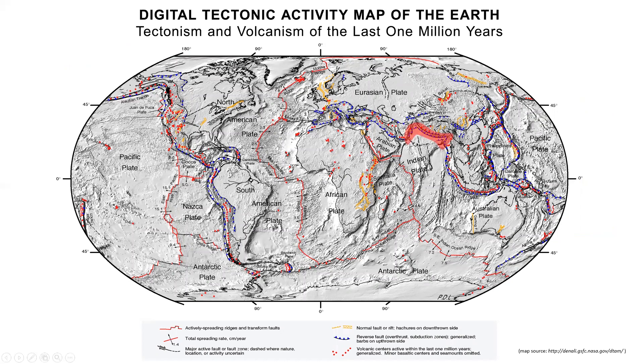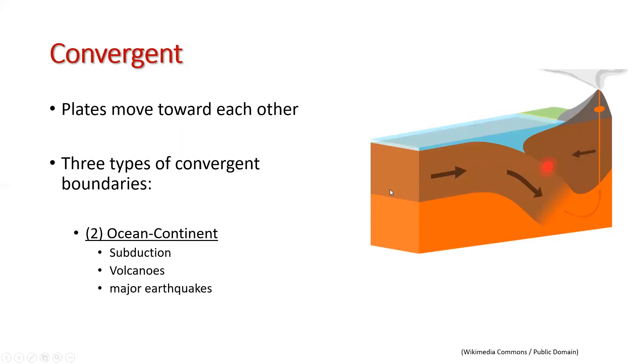The next subtype is ocean-continent convergent boundaries. These boundaries are characterized by subduction. Subduction is a process where the oceanic plates dive underneath or are subducted under the other plate. In this figure, here is the subducted plate.